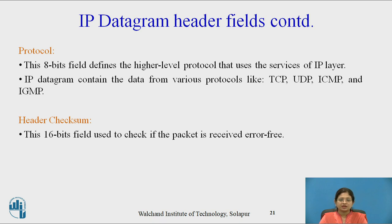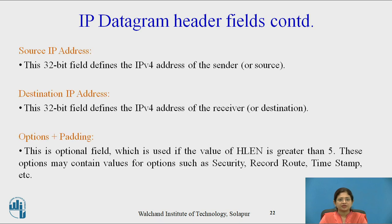The header checksum field is a 16-bit field used to check whether the packet is received error-free. The source IP address is a 32-bit field defining the IPv4 address of the sender. The destination IP address is a 32-bit field defining the IPv4 address of the receiver. The last field is option plus padding — an optional field used when the header length value is greater than 5, and it may contain values for options such as security, record route, timestamp, etc.